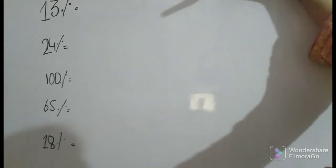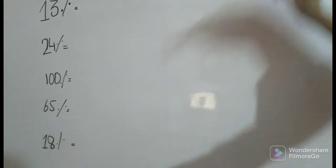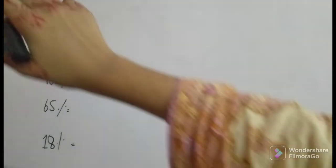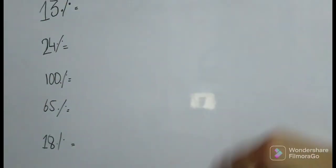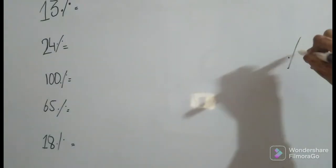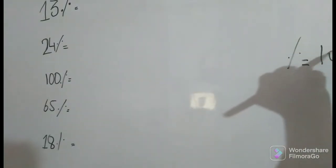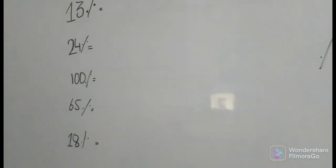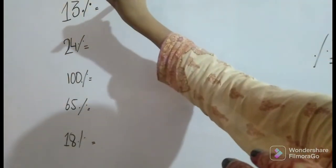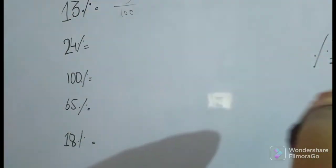So how can we convert 13% to a fraction? Percent is equal to 1 over 100. So let's do this: 13% would be 13 over 100, so 100 would be our denominator.